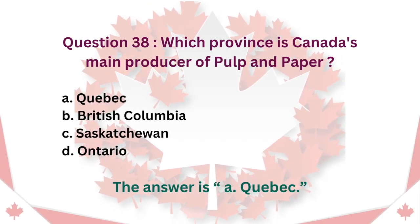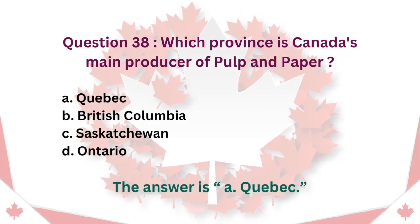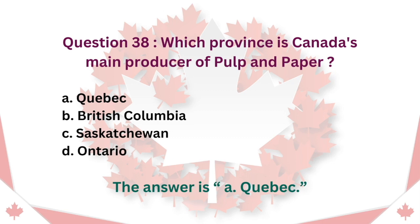Question 38: Which province is Canada's main producer of pulp and paper? A. Quebec. B. British Columbia. C. Saskatchewan. D. Ontario. The answer is A. Quebec.